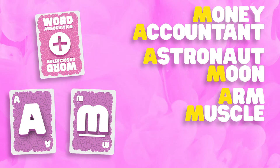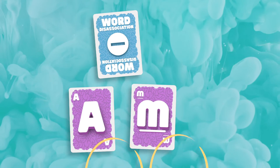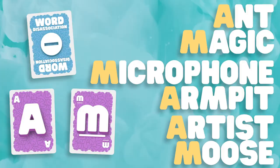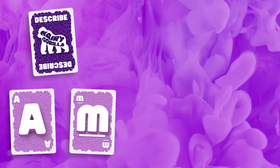Next up is Word Disassociation. This time, we need two words, each beginning with one of the visible letters, that have literally no connection at all. For example, Ant and Magic, Microphone and Armpit, or Artist and Moose. Next up is Describe It, also known as the Hairy Gorilla Card, where we need a two-word description of something using the letters — such as Angry Monster, Mucky Alpaca, Ancient Monument, or Mouldy Apple.